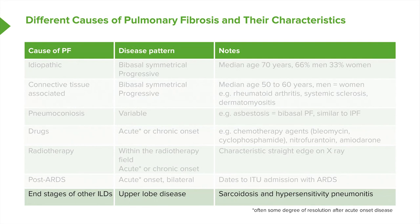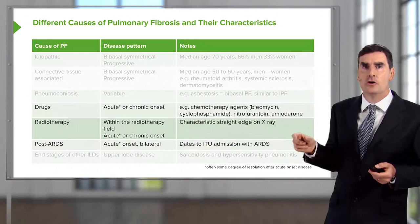You may also get diseases such as end-stage sarcoidosis or hypersensitivity pneumonitis, where the disease is not in a bibasal distribution but tends to be upper lobe disease. Both sarcoidosis and hypersensitivity pneumonitis may cause pulmonary fibrosis, but this tends to be an upper lobe distribution rather than basal.